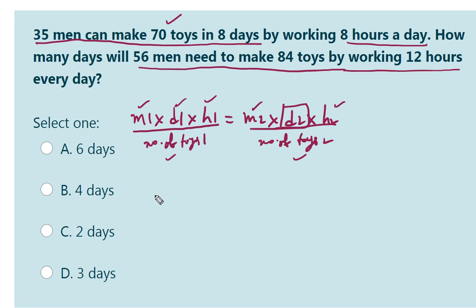Let us substitute the values. 35 into 8 into 8 by number of toys 70 is equal to 56 into D2 into 12 divided by 84.